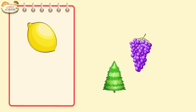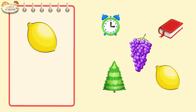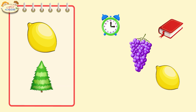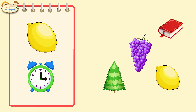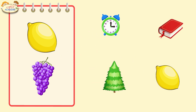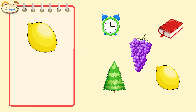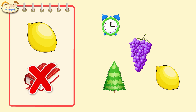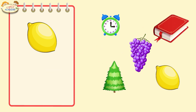Here is a lemon. Now let's look at these objects and find the same one. Is this one the same? No, this object is different. Maybe this one? No, this one is also different. Maybe this one? No, it's different. Is this one the same? No, it's not. Then maybe this one? Yes! These lemons are the same.